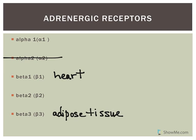That leaves alpha-1 and beta-2. The ones are always excitatory or stimulatory; the twos are always inhibitory. So alpha-1 will have excitatory effects on a target - for example, if norepinephrine causes smooth muscle to contract, that's an alpha-1 adrenergic receptor. If it caused that smooth muscle to relax, that would be a beta-2.